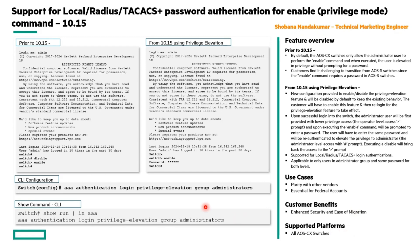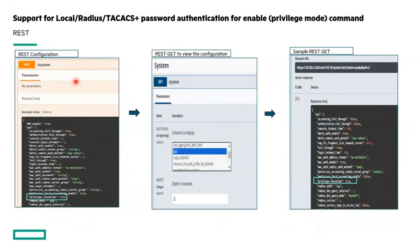There is no dedicated show command, so we can use 'show run' along with filters like AAA. Similar to configuration via CLI, we can also perform configurations via REST. I have provided a snapshot of the REST POST as well as the REST GET, with a sample REST GET shown here.